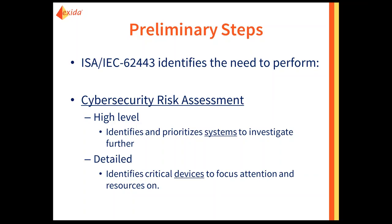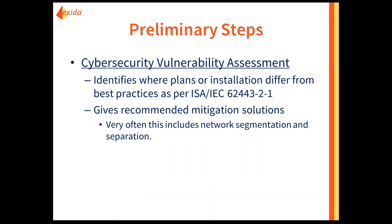The high-level assessment identifies and prioritizes the systems or functions which are either most critical to your process or most vulnerable. Once you complete the high-level assessment, you move to a detailed risk assessment, which identifies areas of the process or devices that are most vulnerable, most critical, or low-hanging fruit that can be addressed easily. Also included in the 99 series is the need for a cybersecurity vulnerability assessment.